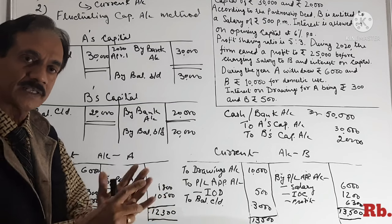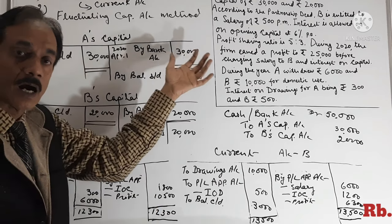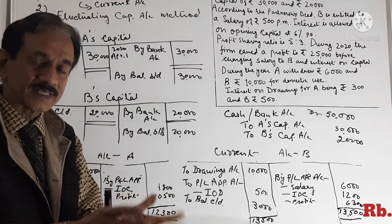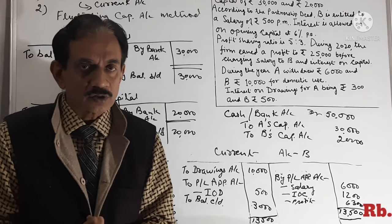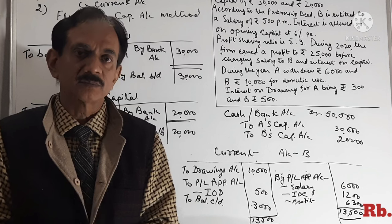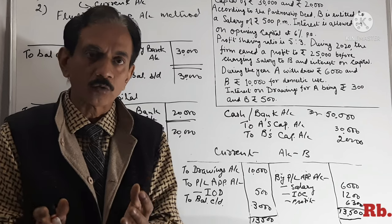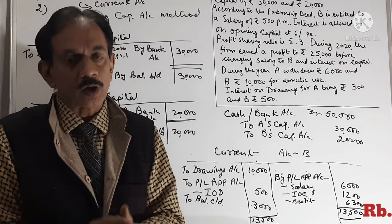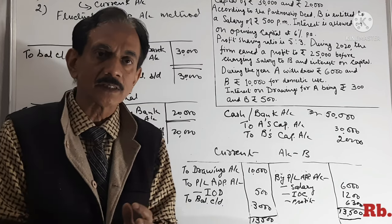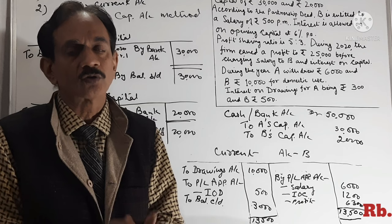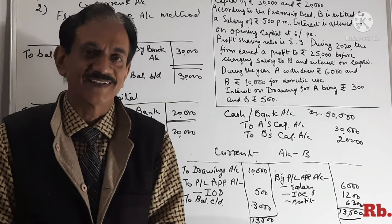To yahan par students hamara question complete ho jata hai. Fixed Capital Account Method mein do accounts bante hain: Capital Account aur Current Account. Jabki Fluctuating Capital Account Method mein sirf ek hi account banta hai jisko hum bolte hain Capital Account. Fixed Capital Account Method mein capital amount of partners will remain unchanged and unaltered, jabki Fluctuating Capital Account Method mein capital amount every year fluctuate karta hai. Yeh tha students hamara aaj ka video jisme humne partners capital account ko bahut ache se samjha. In case koi doubt hai to comment box mein likhiye. Next video mein hum interest on capital aur interest on drawings ko ache se samjhenge aur iska calculations kaise karte hain, illustrations ke sath. Tab tak ke liye apna dhyan rakhiye aur ache se padhai karte rahiye. Thank you very much.